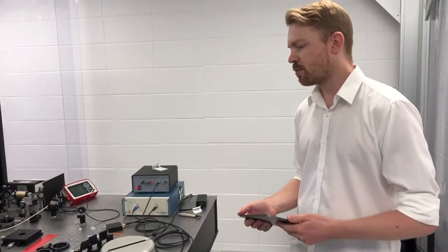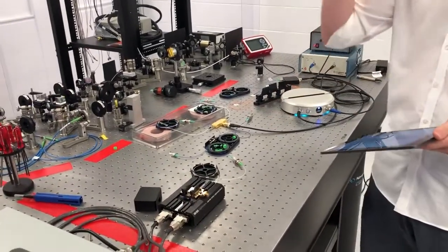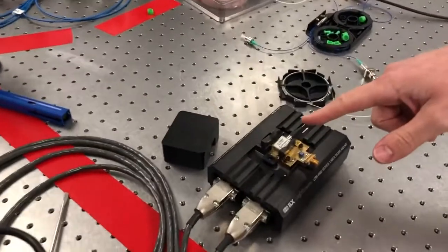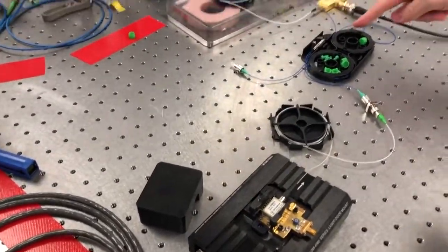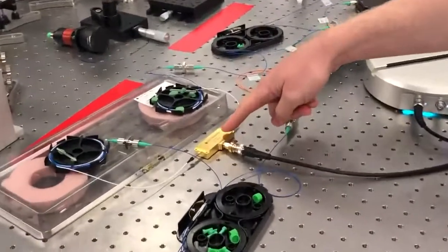Okay, so the experiment we've got set up here is a simple Mach-Zehnder heterodyne interferometer. We essentially generate light from a DFB laser here, and then we separate it into two arms. One of those arms is frequency-shifted using a acousto-optic modulator.